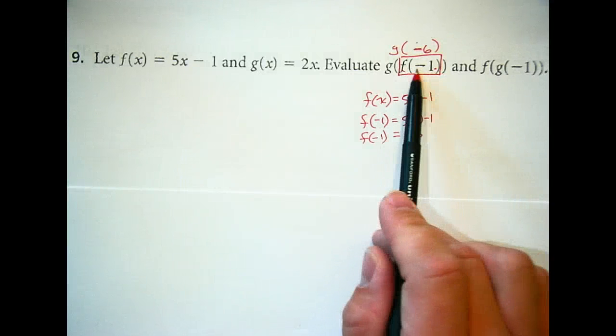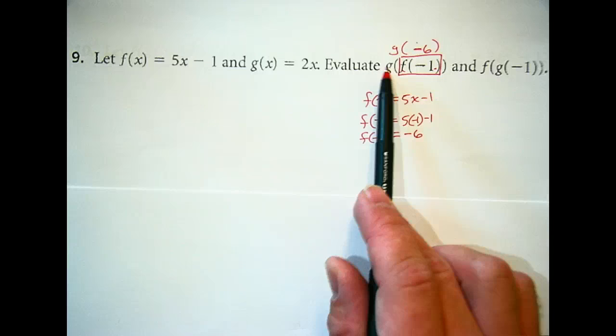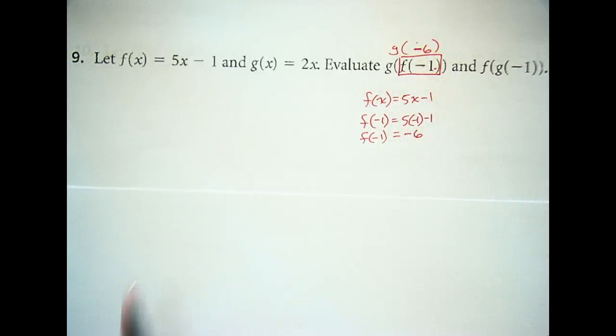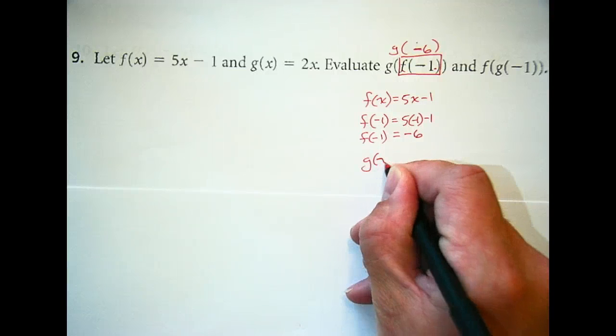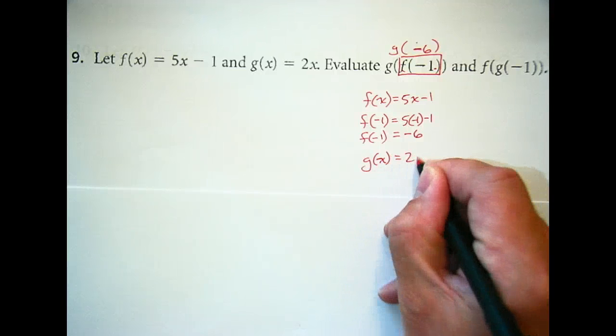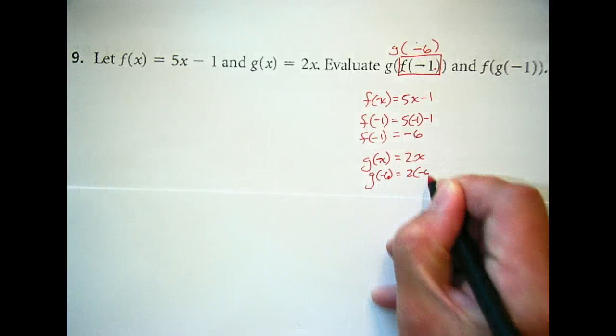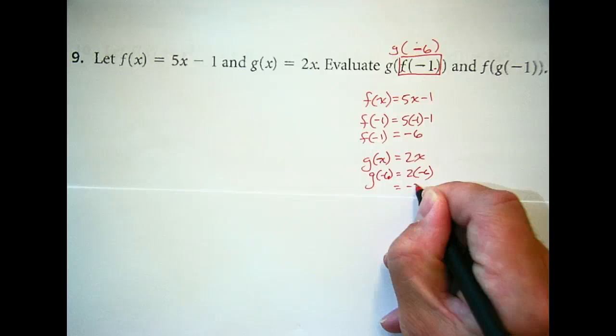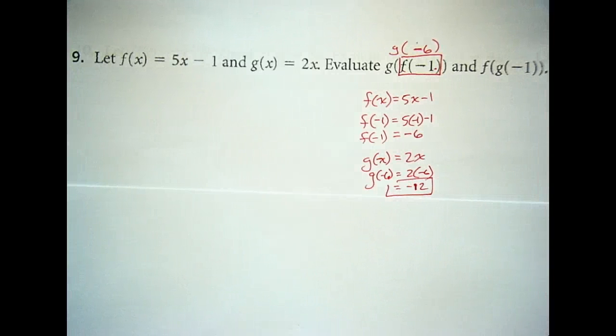When you have something that depends on something else, you're dealing with two functions here. So we have f(-1), that piece that we get from that input is going to give us the new input for our g(x). So now we're going to go g(-6). So in our g(x) equation, which is 2x, we go g(-6), gives us 2 times -6 or -12. How many got that? Negative 12? Any questions there?